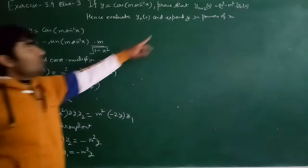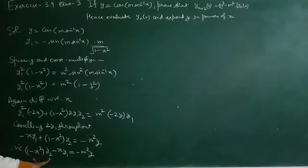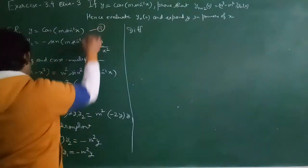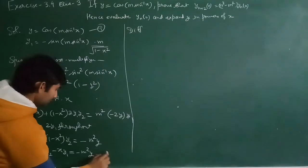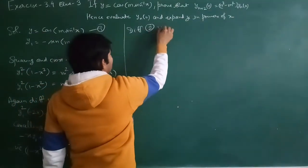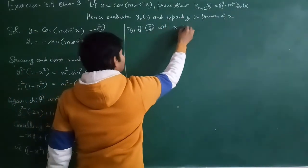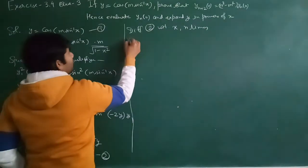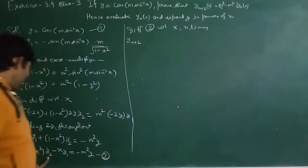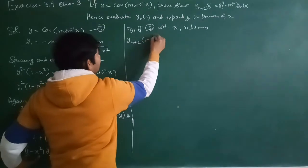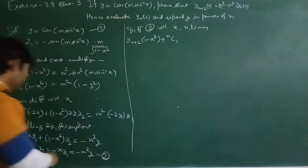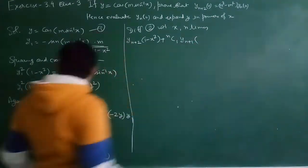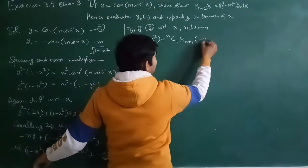We need yn+2(0), so we differentiate this equation n times with respect to x. Taking equation (2) and differentiating n times: the first term gives (1-x²)·yn+2 via Leibniz theorem, plus nC1·yn+1·(-2x) as the next term.